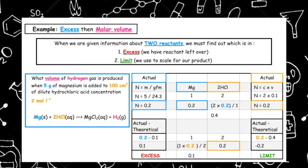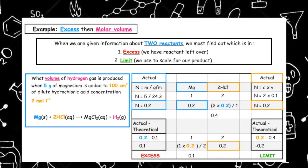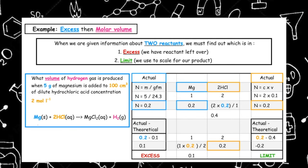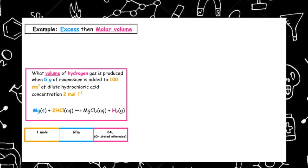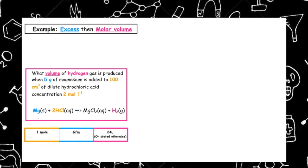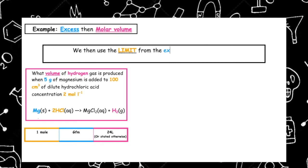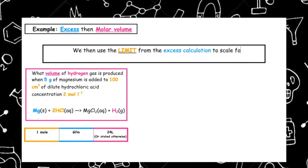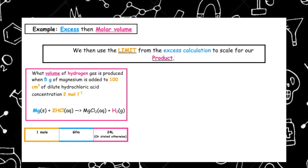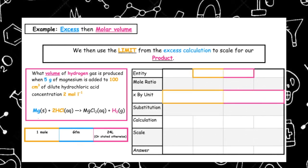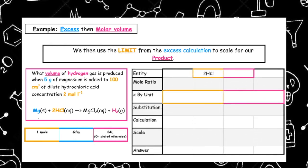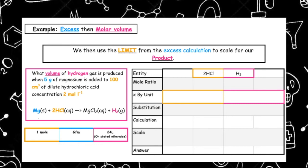We carry through our limiting reagent to the second step. The second part of the question asks us to calculate the volume of hydrogen, so we use molar volume. We use the limiting reagent from the excess calculation to scale for our product. From the balanced equation we take down 2HCl and H₂, and the mole ratio is 2 to 1.